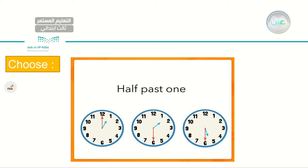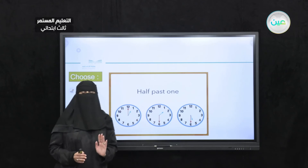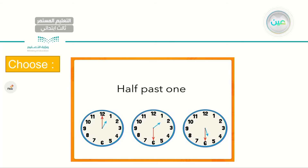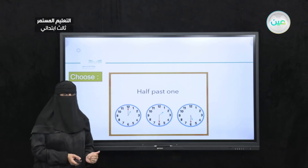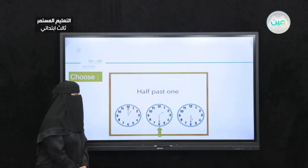For this one I need you to choose. I have three clocks and the time is half past 1 — which clock are we referring to? Is it the first one, the one in the middle, or the last one? The answer is the one in the middle. The first one is 1 o'clock and the last one is half past 5.